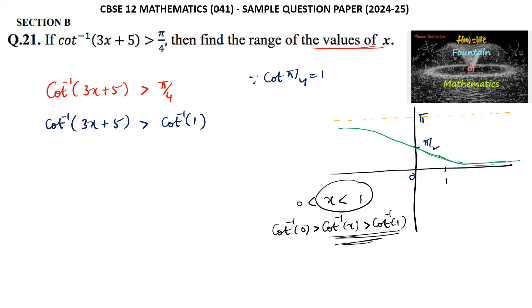Since cot⁻¹(3x + 5) > cot⁻¹(1), we can write 3x + 5 < 1. That is, 3x < 1 - 5, so 3x < -4, therefore x < -4/3.